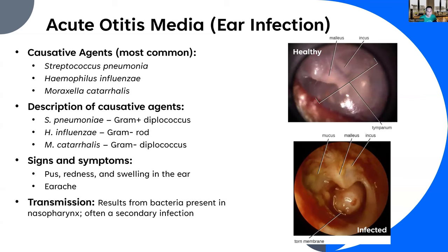Signs and symptoms include pus, redness, and swelling in the ear, and a pretty pronounced earache. This is where they use an otoscope to look inside. Here's what a healthy ear looks like, and this is what an infected ear looks like — you can see the difference.